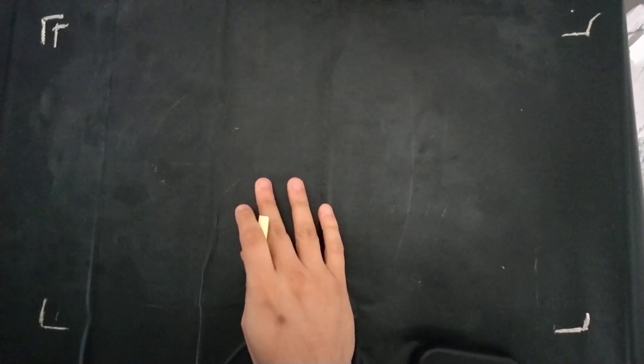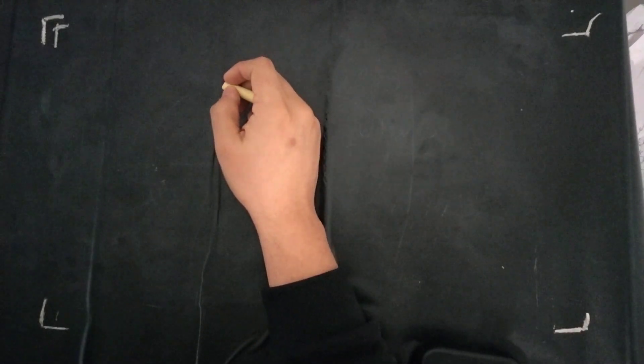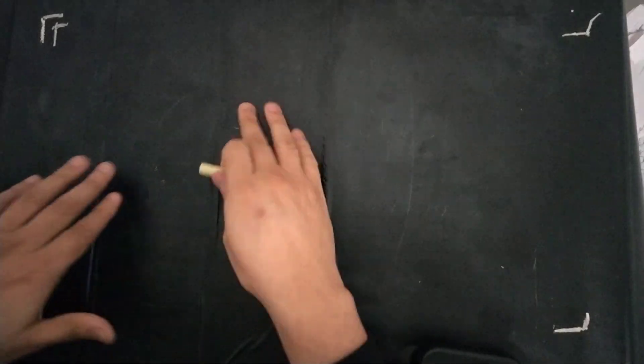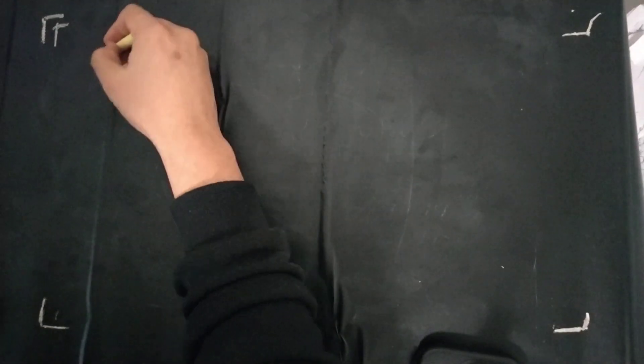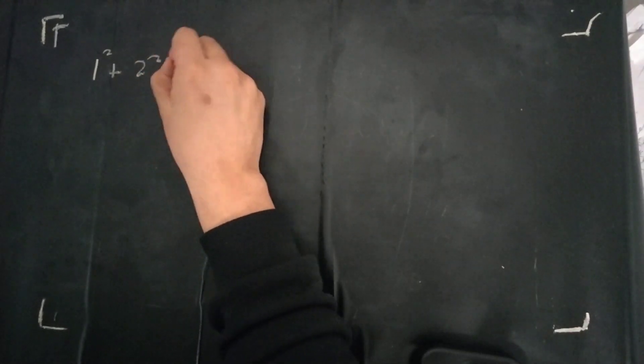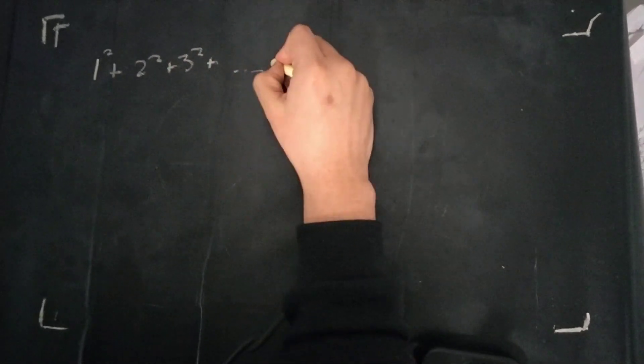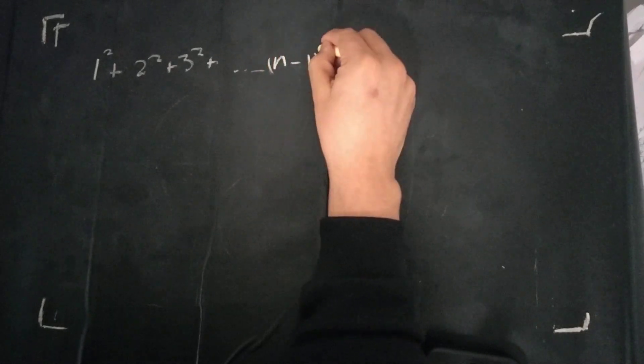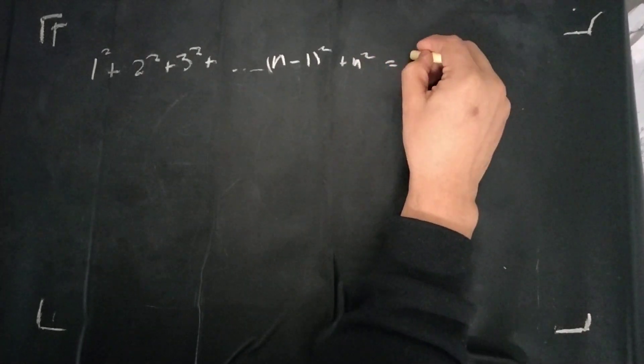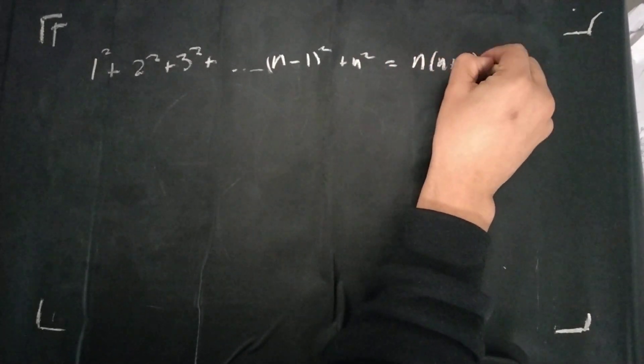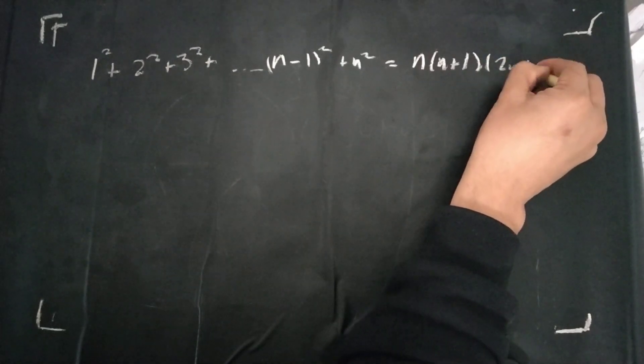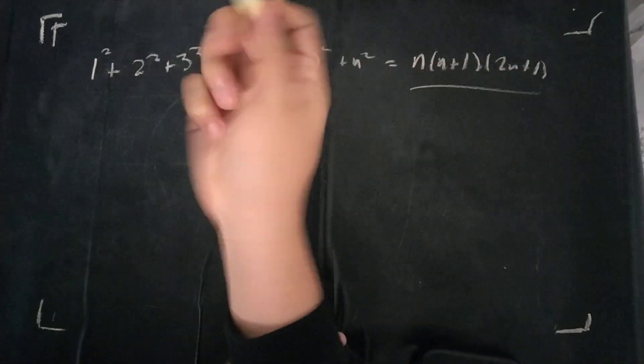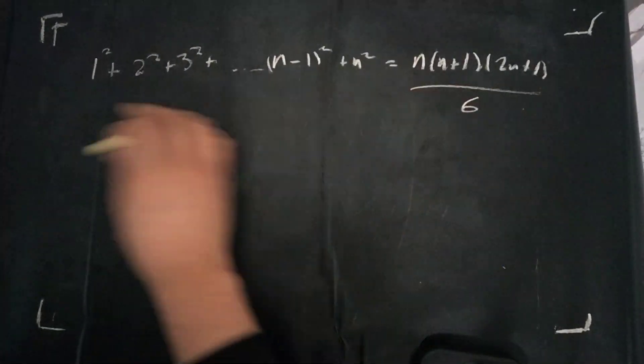That will be problem number one. It's a pretty simple problem that relies on mathematical induction for its proof, and I think you guys will enjoy it. So the problem goes, we want to show that 1² + 2² + 3² + ... + n² is equal to n(n+1)(2n+1)/6. So this is what we want to prove.